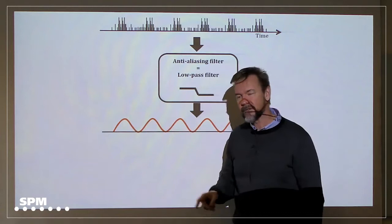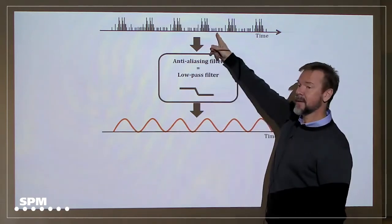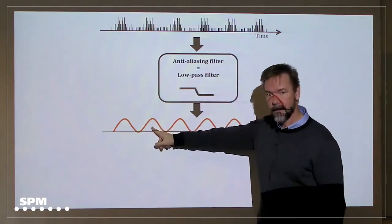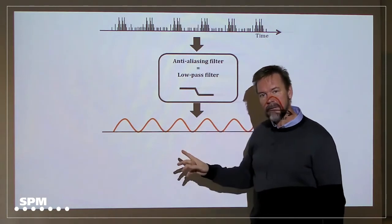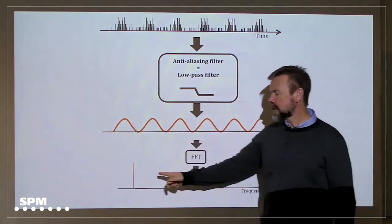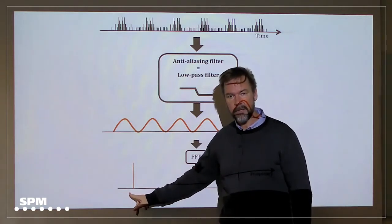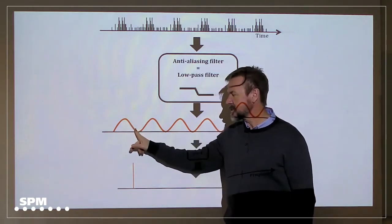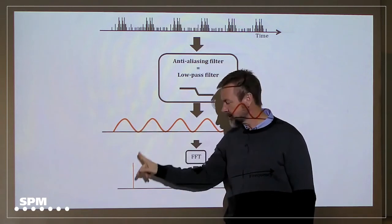This is a sinusoidal-shaped signal, which is the same here. This is the modulation. And now, if you apply the Fourier transform, the FFT, on this signal, it will be a single peak. Because this is a nice and smooth sinusoidal-shaped signal, that's a single peak.